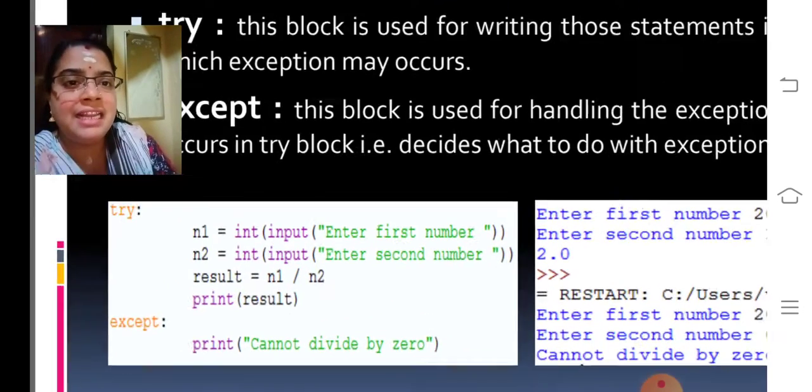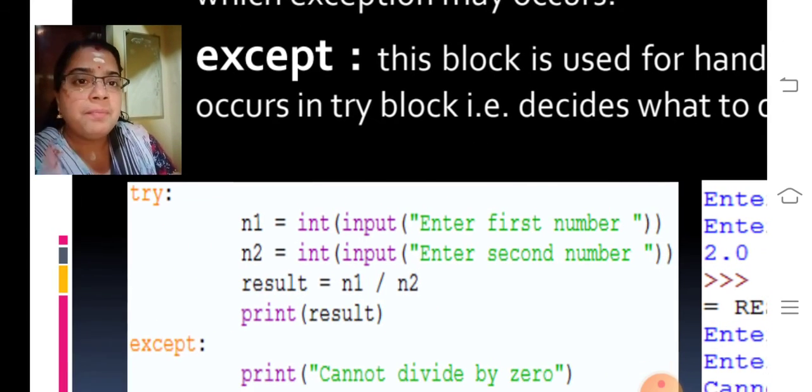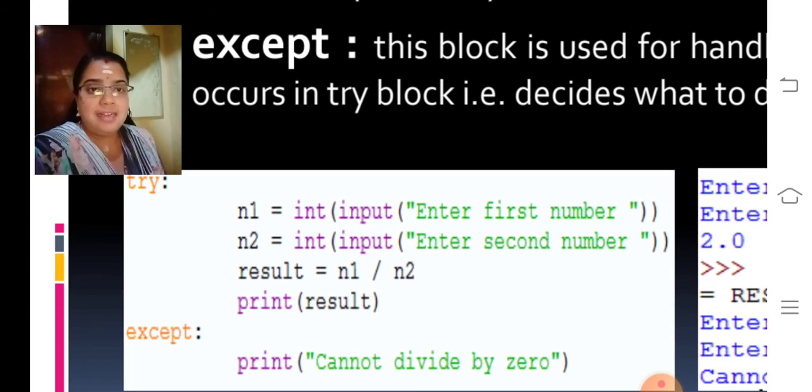Look at the example I had given. Try n1, n2, result. So, if the user provides in the place of n2 value that is 0, then automatically it just stops. Then the exception happens. Cannot divide by 0.